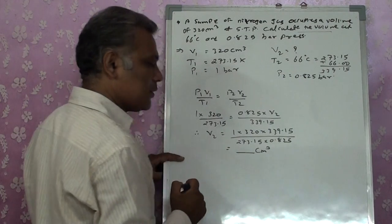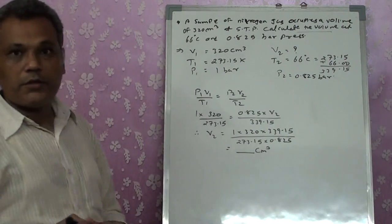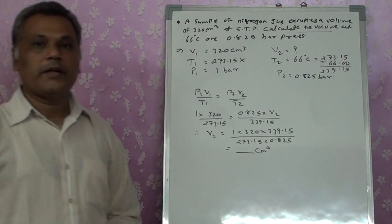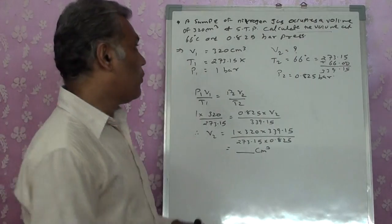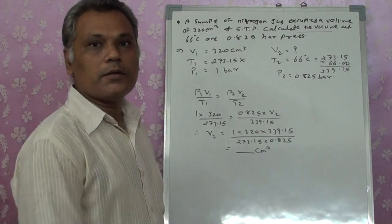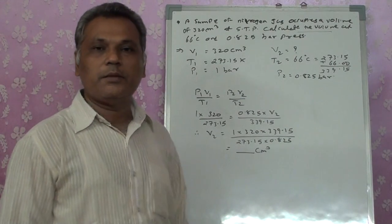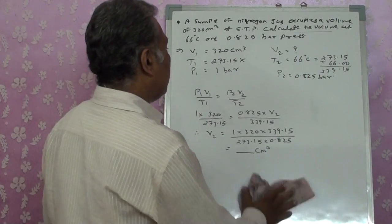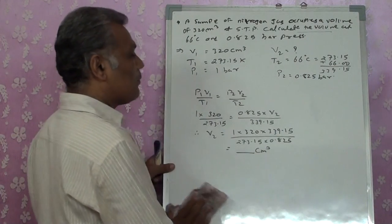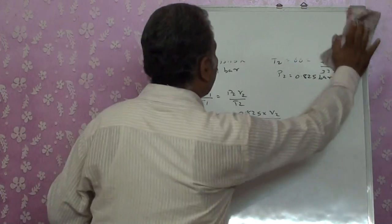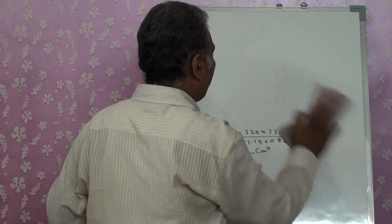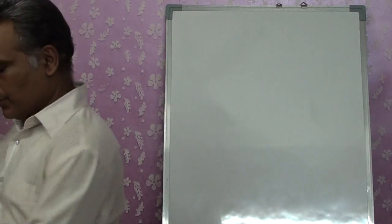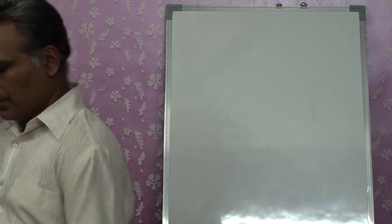Calculate the answer and you will get it in cm³ — that is the volume occupied. It's a simple sum. Let's take one more similar type of problem.